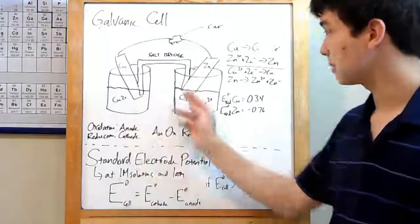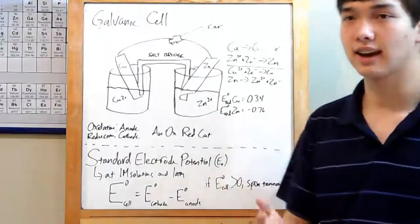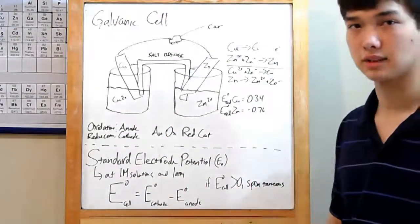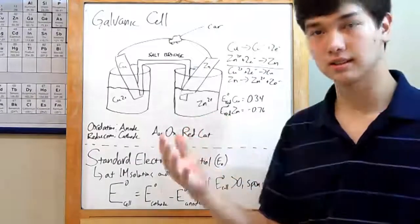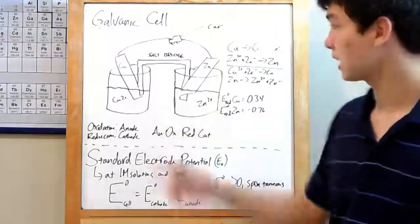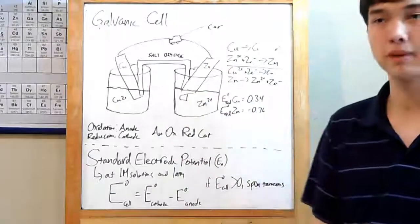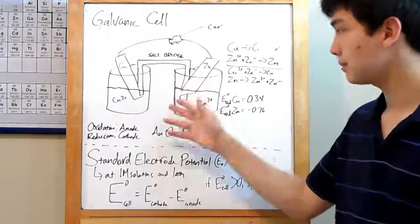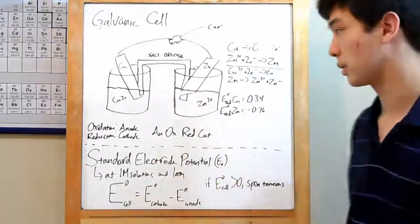The solutions will be connected by a salt bridge. This contains ions that will not take part in a reaction. That's to make sure that these solutions remain neutral. As electrons travel from one side to the other, one will become more positive and the other more negative. By keeping them neutral, they can keep the reaction going.